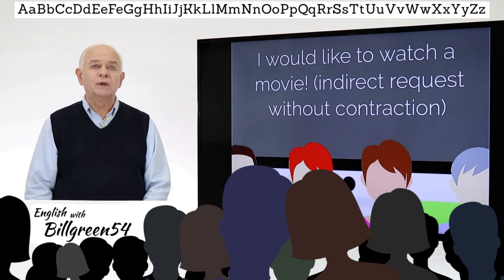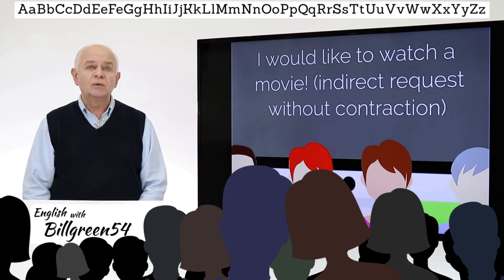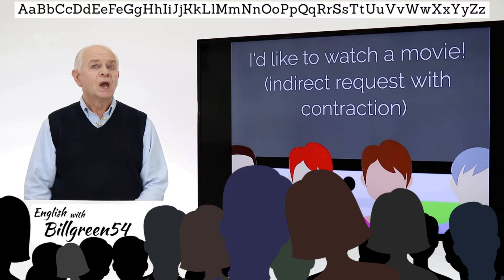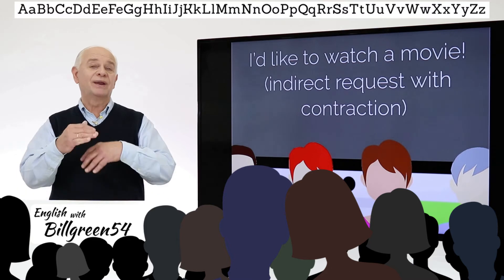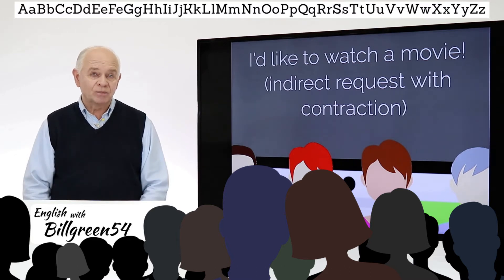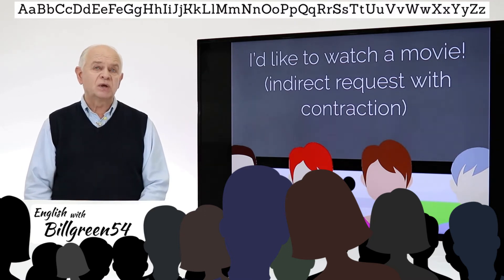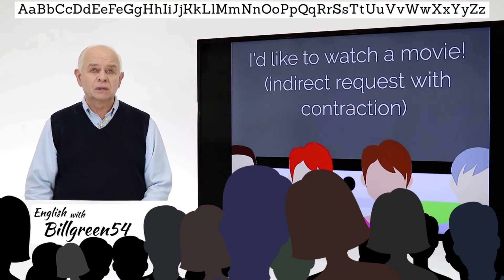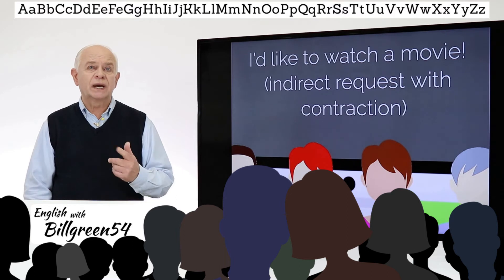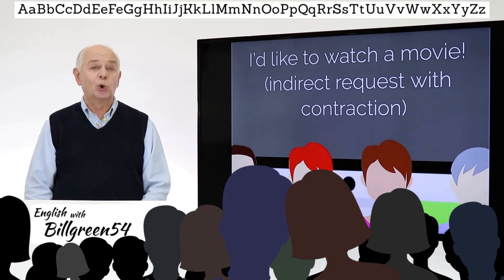I would like to watch a movie. That's an indirect request without a contraction. I'd like to watch a movie, somebody. I might follow that up with another statement. What would you like to do tonight? Someone might ask you that. Maybe it's an advanced speaker of English or someone who has English as their native language. Yes, I would like to watch or I'd like to watch a movie tonight.